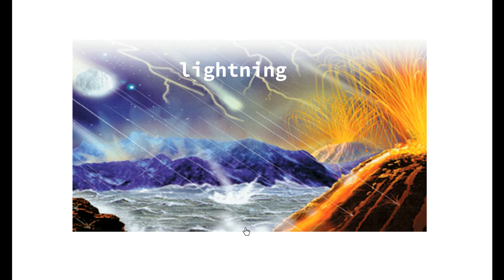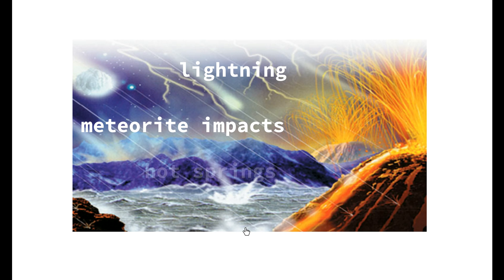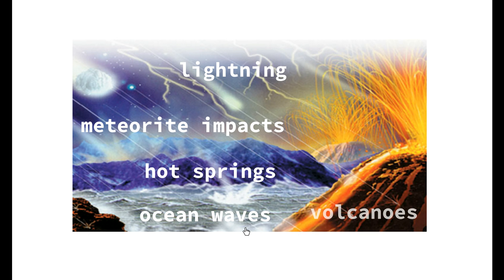Lightning provides electrical discharges from the movement of particles in the atmosphere — so electrical, light, and heat energy. Impacts from meteorites, which are objects moving into Earth's atmosphere from space, can cause friction among atmospheric particles and increase heat. Hot springs beneath the surface of the water also contributed warmth. The movement of ocean waves provides kinetic energy, with molecules constantly colliding. And volcanoes provide lots of heat, sound, and light energy.